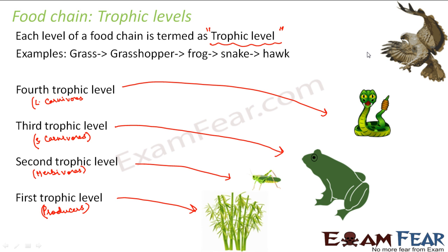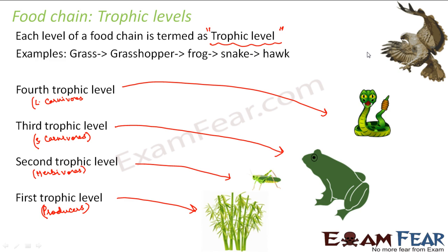So now you understand what is a food chain and what we mean by trophic levels. A food chain can have two levels, three levels, four levels, or five levels as well. Let us look at some examples of food chains in various ecosystems. As we started with this lesson, we have spoken about ecosystems, so let us see how food chains exist in different ecosystems.